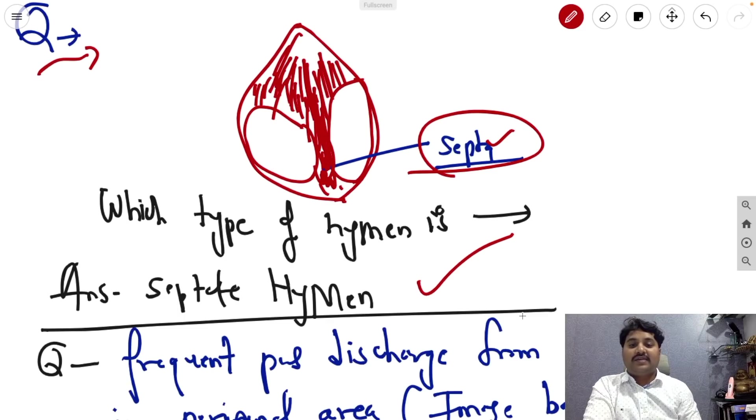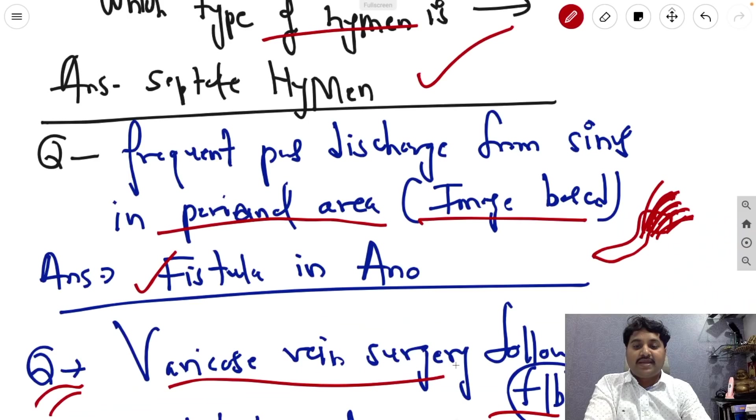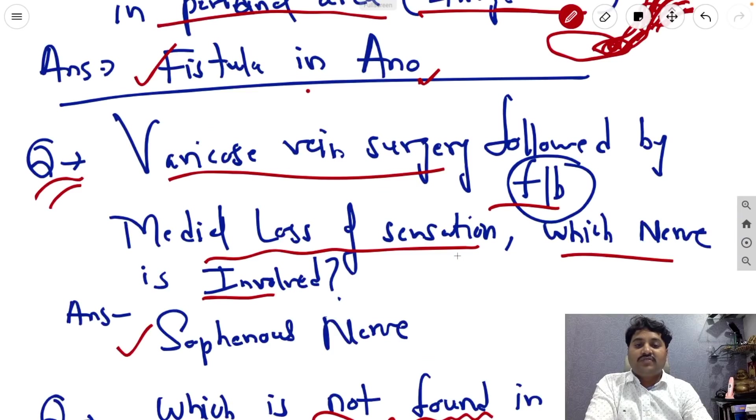This is the septate hymen, which type of hymen it is. Frequent pus discharge from the sinus in the perianal area, it is also one of the image based questions. Suppose this is a sinus which frequently generates pus, so the answer is fistula in ano.